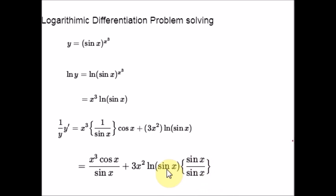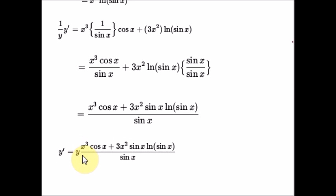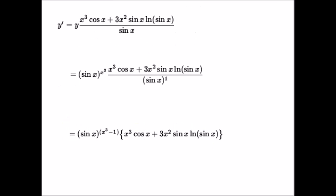After multiplying and taking the common denominator, we multiply both sides of the equation by y to isolate y dash. Now plug back the original value: y equals sin x raised to x cubed, so the expression includes sin x raised to x cubed. Finally, combine the powers of sin x to get a simplified form. That is it for this problem.